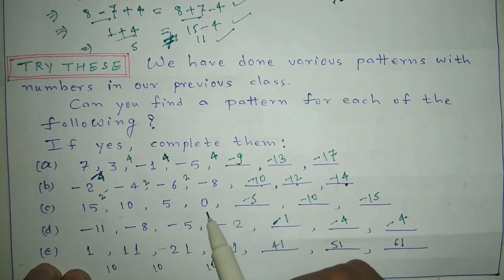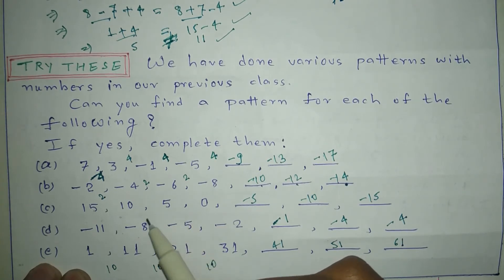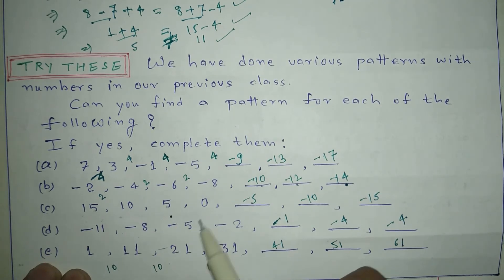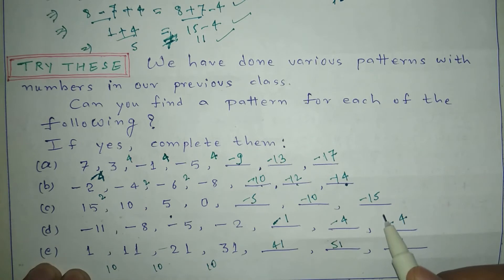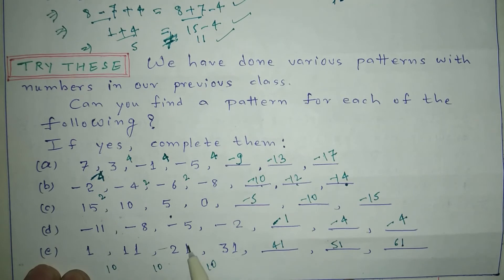In question C, the series is 15, 10, 5, 0. We can observe that 5 is being subtracted continuously, so the answers are minus 5, minus 10, and minus 15. In question D, the series is minus 11, minus 8, minus 5, minus 2.